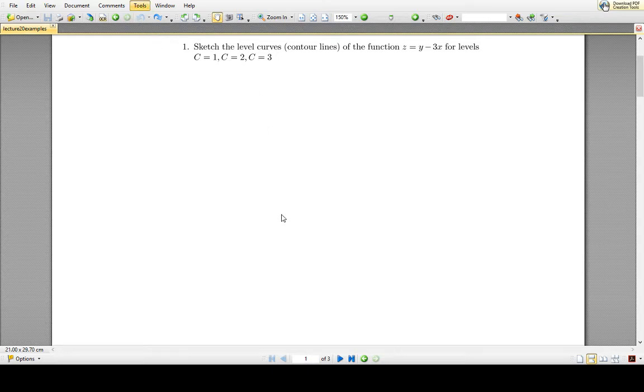So in this question what they're asking us to do is this is a function of two variables so z is like the height of a mountain and y and x are coordinates. As you change y and x, the height of the mountain changes. What this question is essentially asking us to do is imagine taking a slice through the mountain at different heights, heights 1, 2, and 3, and then ask ourselves what the slice looks like at each of these heights.